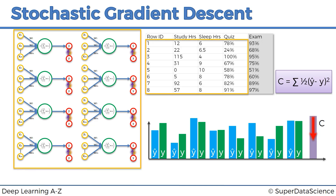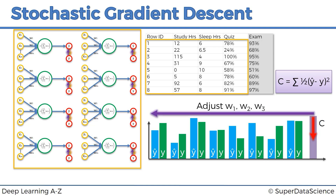Normal gradient descent is when we take all of our rows, plug them into our neural network — and though the neural network is shown copied several times, there is only one neural network; this is just for visualization purposes — and once we've plugged them in, we calculate our cost function based on the formula and then we adjust the weights. This is called the batch gradient descent method.